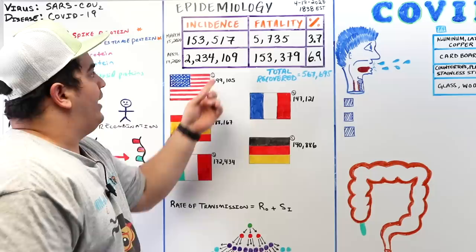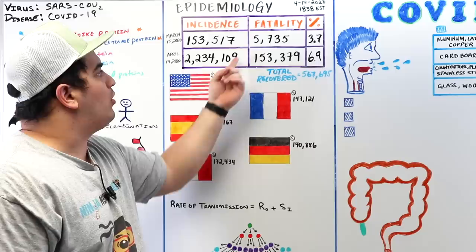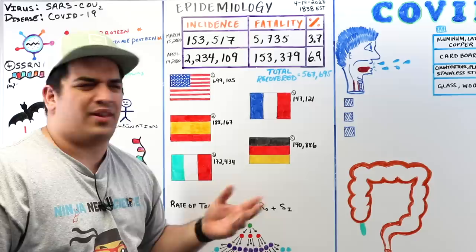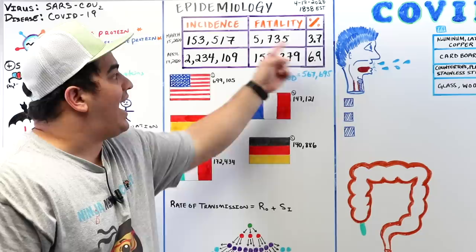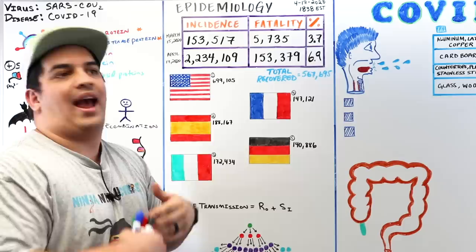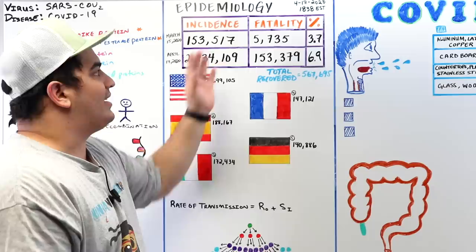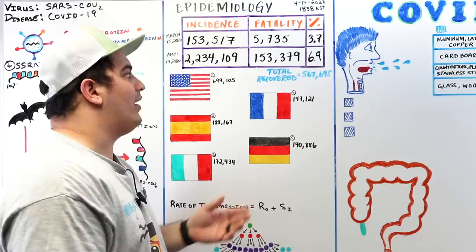The true case fatality rate may be lower than 6.9% if the denominator is larger than reported — since asymptomatic individuals or those with mild upper respiratory symptoms may not be tested, meaning incidence could be significantly higher than recorded.